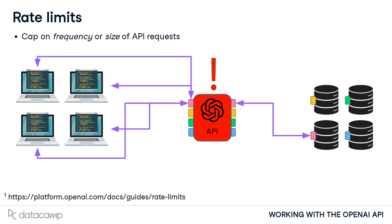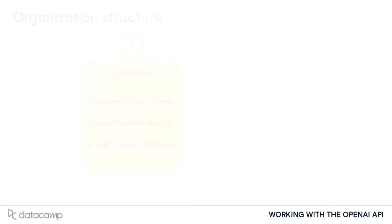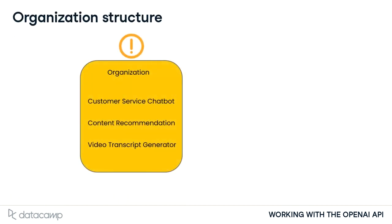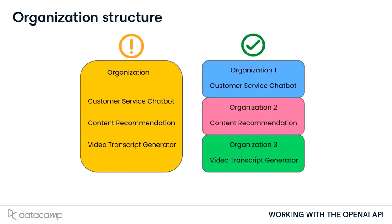For many cases this may not be an issue, but if a feature is exposed to a large user base and all the requests require generating large bodies of content, they could be at risk of hitting the rate limits. Much of this risk can be mitigated by, instead of running multiple features under the same organization, having separate organizations for each business unit or product feature, depending on the number of features built on the OpenAI API.